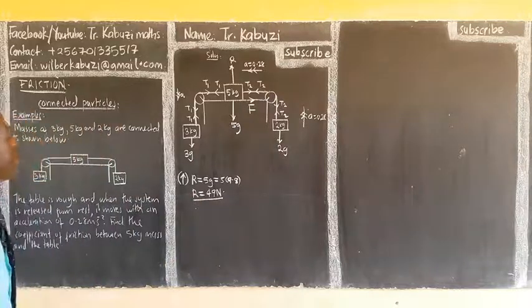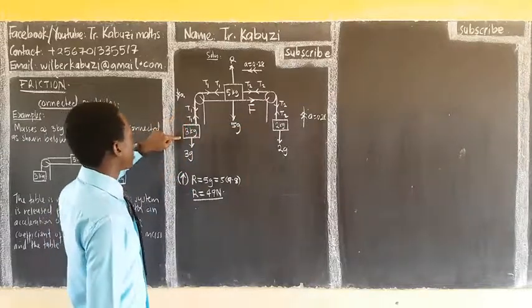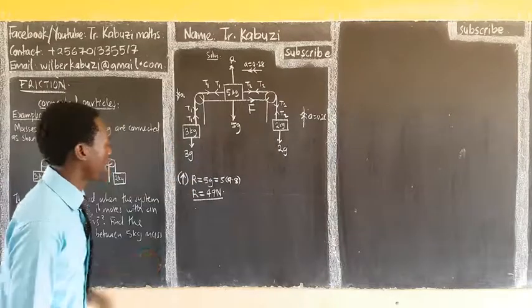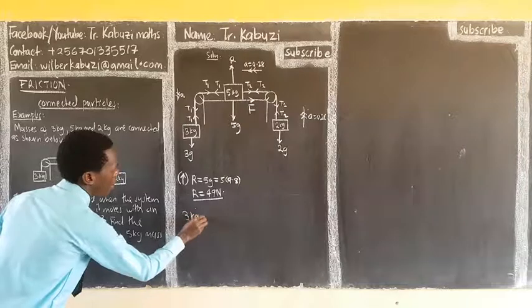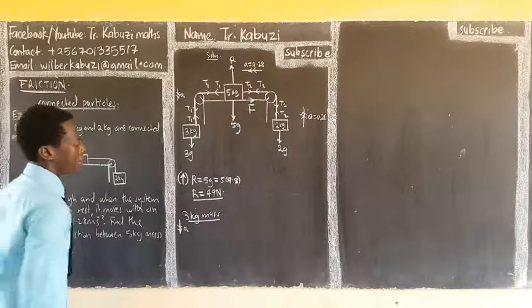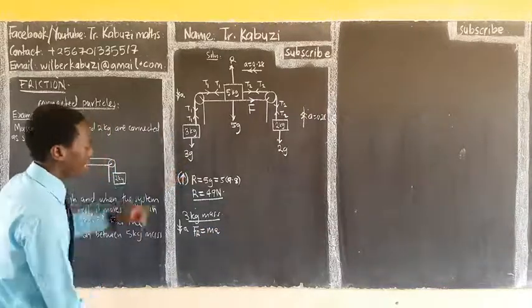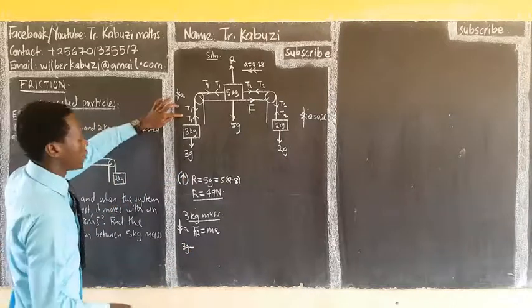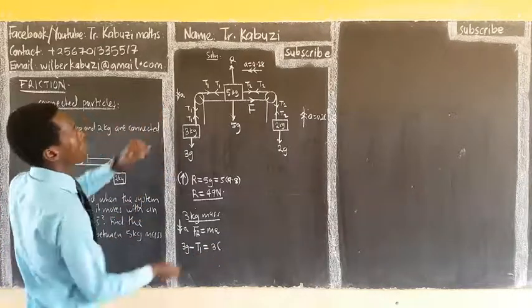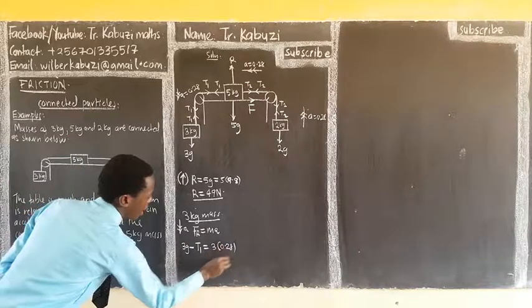So, now, we have that. So, after getting R, then we can come, we can start with any, but let us start with this one here. Or we can start with this one. Whatever. So, let us start with these two forces hanging. So, we can start with a three kilogram mass. Where is the acceleration? Its acceleration is in this direction there. So, we know that resultant force is always equal to the mass times its acceleration. It's in this direction. What is pulling it is the 3G. Then, minus, there's a force opposing, which is the T1. Equal to the mass, which is 3, and the acceleration is going to be the same, 0.28.